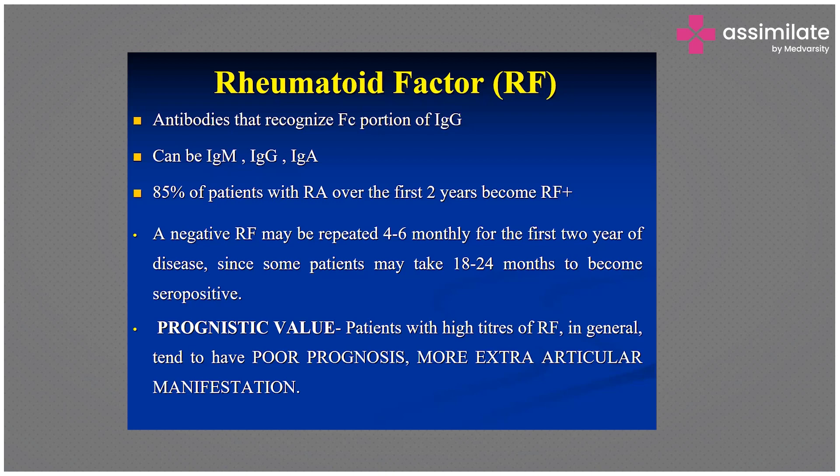About 85% of RA patients become RF positive over the first two years. If negative, it may be repeated every four to six months for the first two years and may take 18 to 24 months to become positive. Patients with high titers of RF tend to have poor prognosis with more extra-articular manifestations.